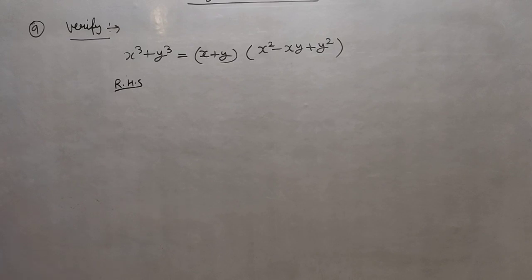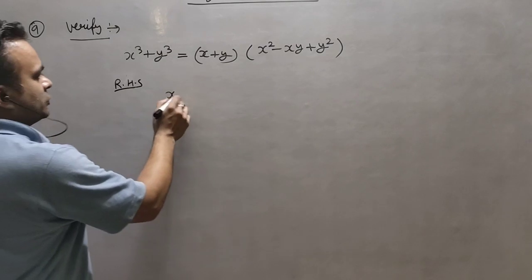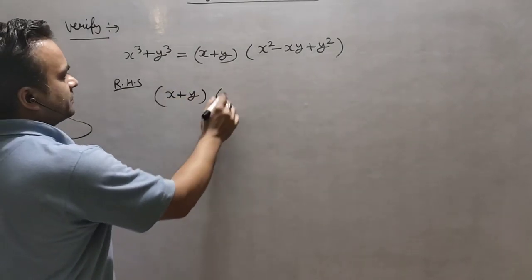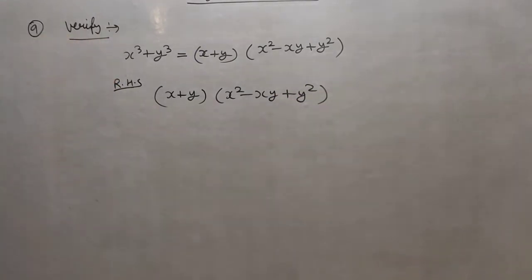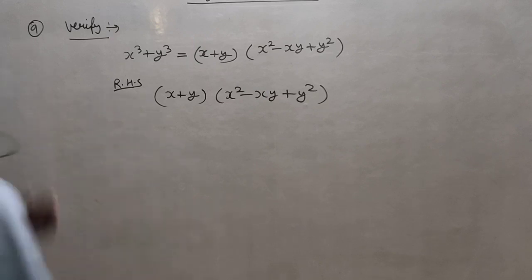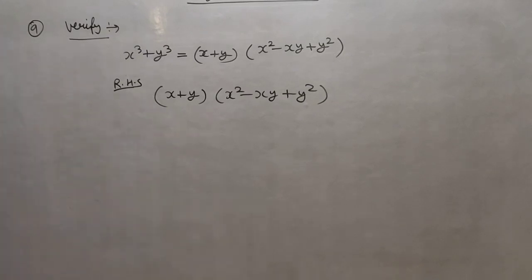Because we have to add or subtract so many things, but if you move from right to left then it is much easier. Ultimately we have to verify, so we are taking the right-hand side and we will try to find the product of the right-hand side and check whether we are getting x³ + y³ or not.